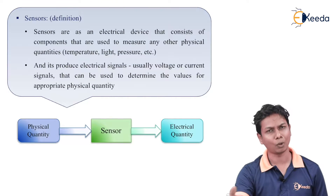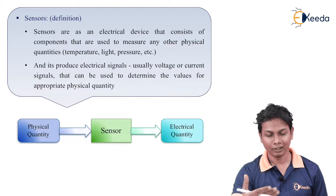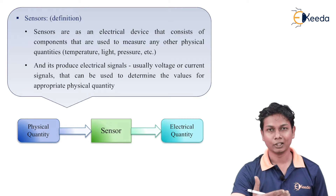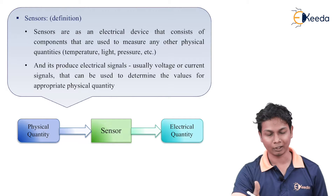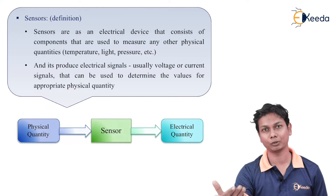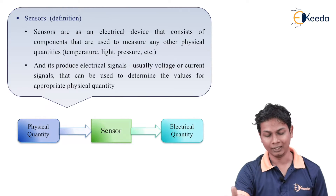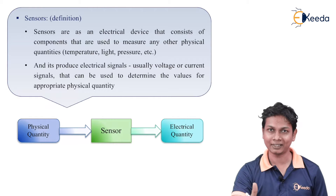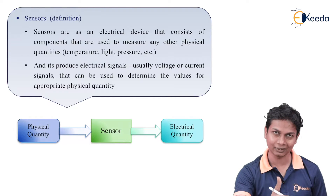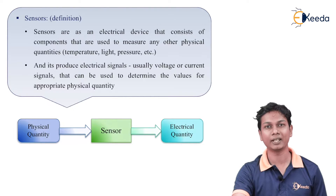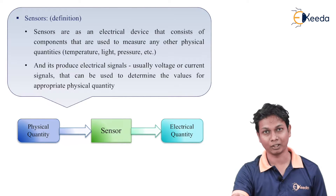The simple definition is shown here with a block diagram. The physical quantity — it can be temperature, pressure, or light — is sensed by the sensor, and that sensor converts that signal into an electrical quantity. The electrical quantity can be voltage or current.